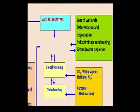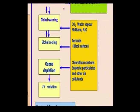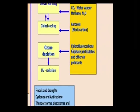These disasters have interrelationships. For example, loss of wetlands — which play an enormous role in preserving and protecting their ecosystem — as well as deforestation and degradation of natural forests, and indiscriminate sand mining and groundwater depletion, all contribute. The factors leading to global warming and the greenhouse effect include carbon dioxide, water vapour, methane, and nitrous oxide. Aerosols and black carbon lead to global cooling. Chlorofluorocarbons, sulfonate particulates, and other air pollutants cause ozone depletion in the atmosphere.